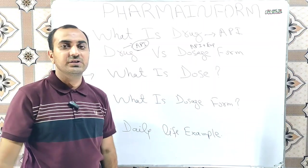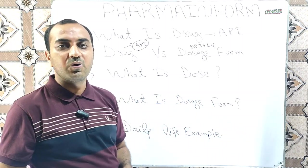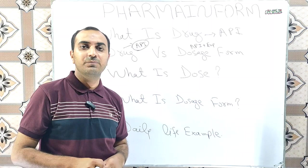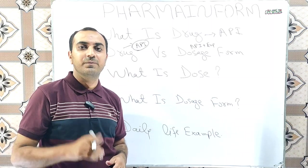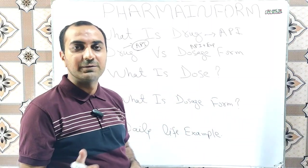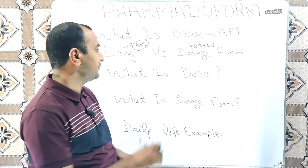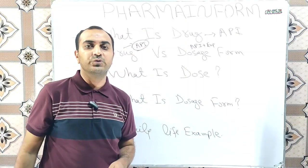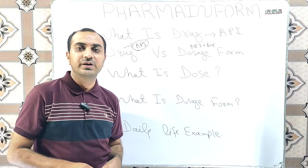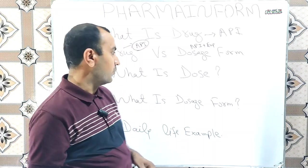The next one is: what is dose? The amount or quantity of a drug prescribed by a practitioner to be taken by the patient at specified time intervals is known as dose. A calculated amount of a drug is known as dose.